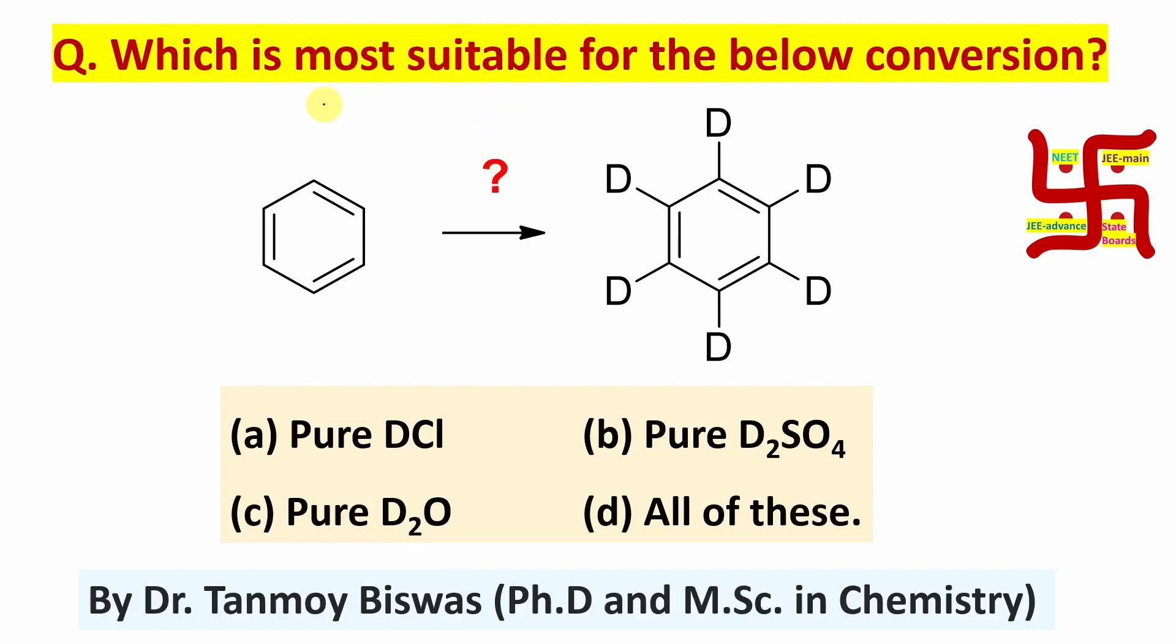Now the question, which is most suitable for this conversion? Here benzene is converted into hexadeuterobenzene. These six protons in benzene will be replaced by deuterium. If you look at the reagents, pure DCl, D₂SO₄, D₂O - one thing is common: is it aromatic electrophilic substitution? Yes, the question is about aromatic electrophilic substitution.